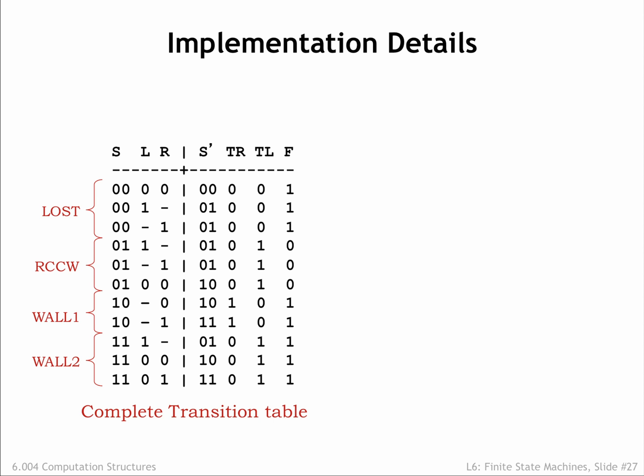Here's the final table where we've used don't cares to reduce the number of rows for presentation. Next, we want to come up with Boolean equations for each of the outputs of the combinational logic. In other words, the two next state bits and the three motion control outputs.